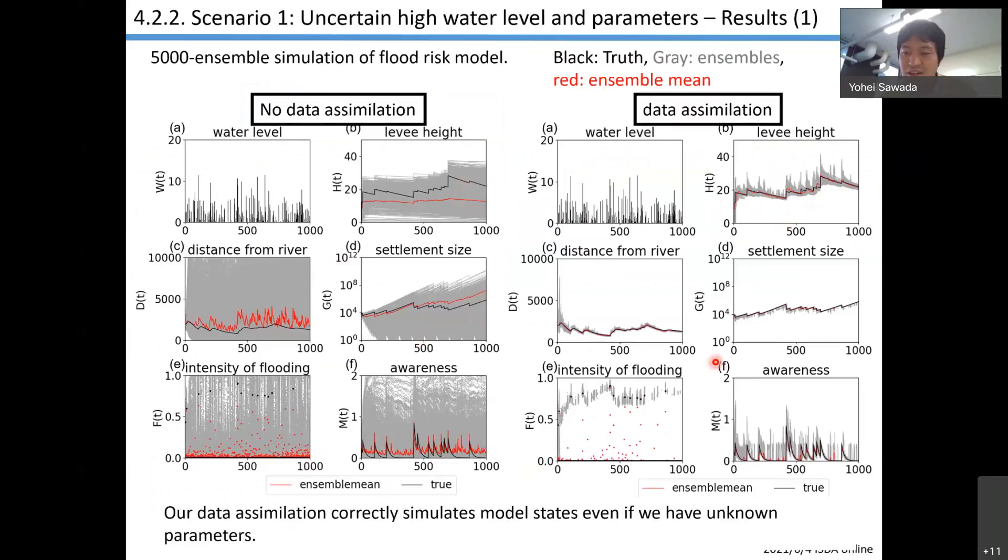Because this is idealized experiment, we have the true parameters, which is the black line here. The good news is our data assimilation can accurately estimate true model parameters. We have high skill to optimize model parameters by particle filters, which is good.